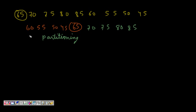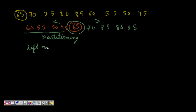So I have partitioned the array with element 65 — all elements to the left are less than 65, they may not be sorted but the criteria is they are all less than 65, and every element to the right is greater than 65. For our example, we will choose the leftmost element as the pivot. Let's see how we approach this problem.